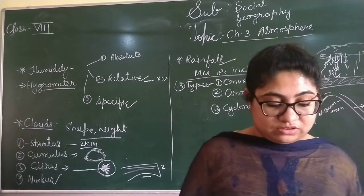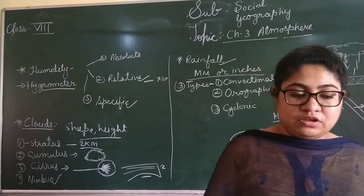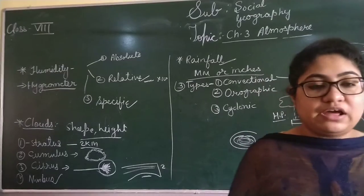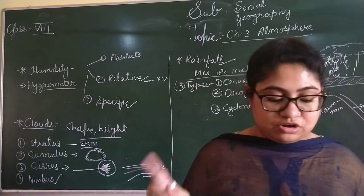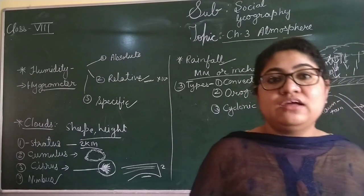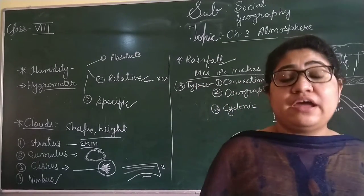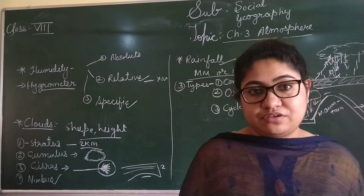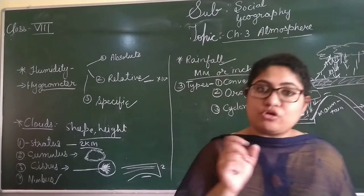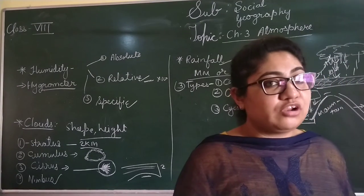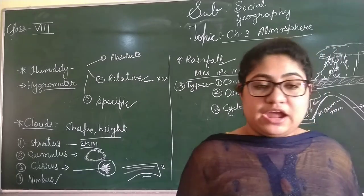Now we talk about the distribution of rainfall — where the heaviest rainfall occurs. The distribution of rainfall on the earth depends on the location and climatic conditions of that region. The most important heavy-rainfall areas in the world are the equatorial regions, the eastern margins of sub-tropical areas, and the western margins of 40 to 60 degrees north and south. Those areas receive heavy rainfall.